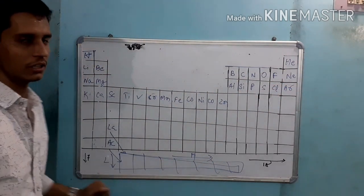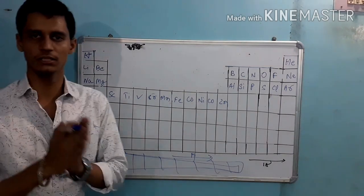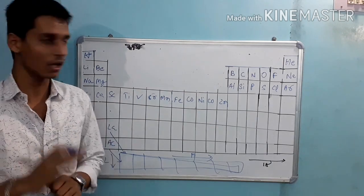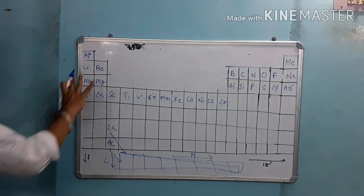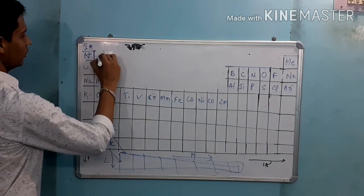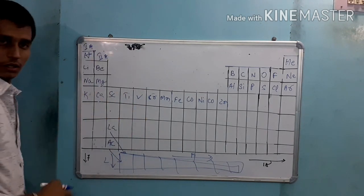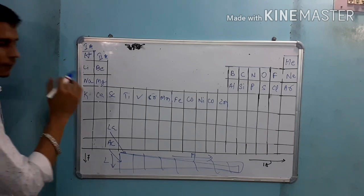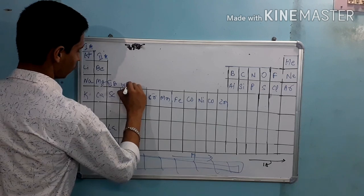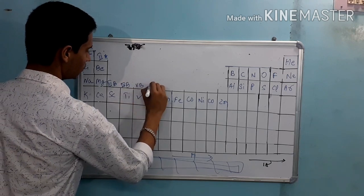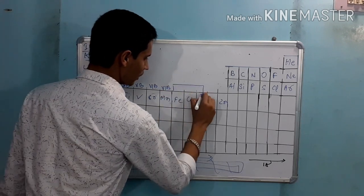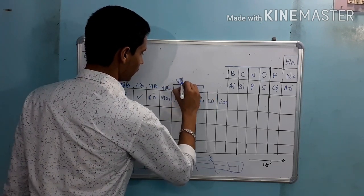The groups are organized as: 3rd B, 4th B, 5th B, 6th B, 7th B, then 8th B.